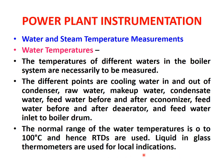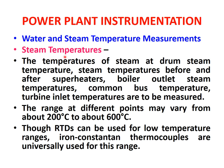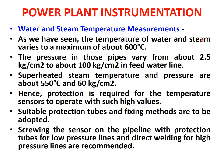For steam temperature measurement, the points include drum steam temperature, steam temperatures before and after superheaters, boiler outlet steam temperature, common bus temperature, and turbine inlet temperature. The range at different points may vary from around 200 degrees Celsius to about 600 degrees Celsius. RTDs can be used for low temperature ranges, but iron-constantan thermocouples are universally used for this range. For steam temperatures, thermocouples are mostly used.